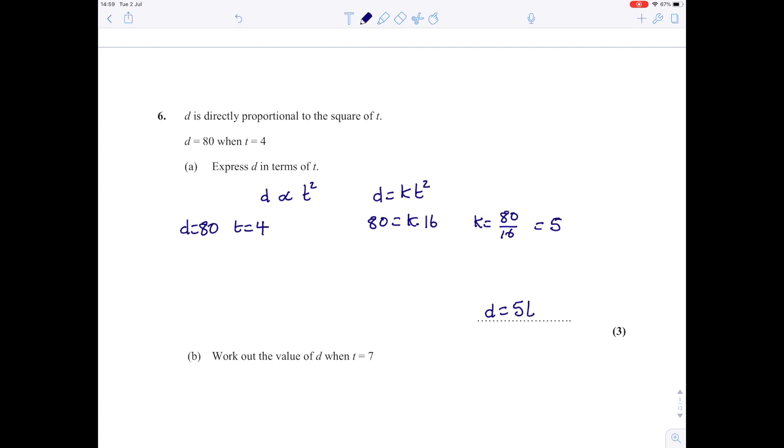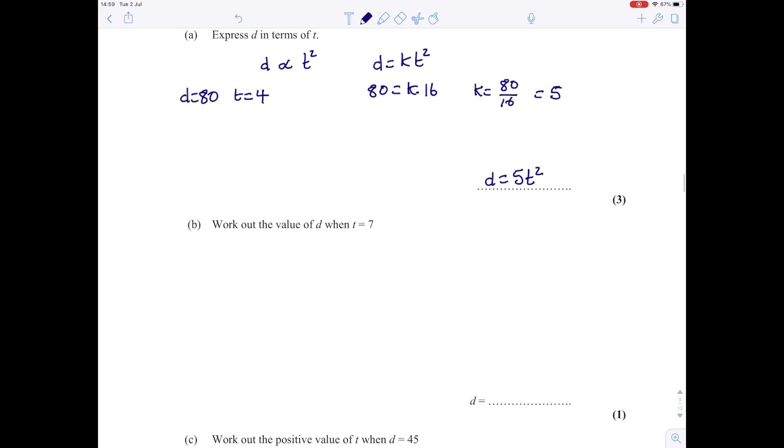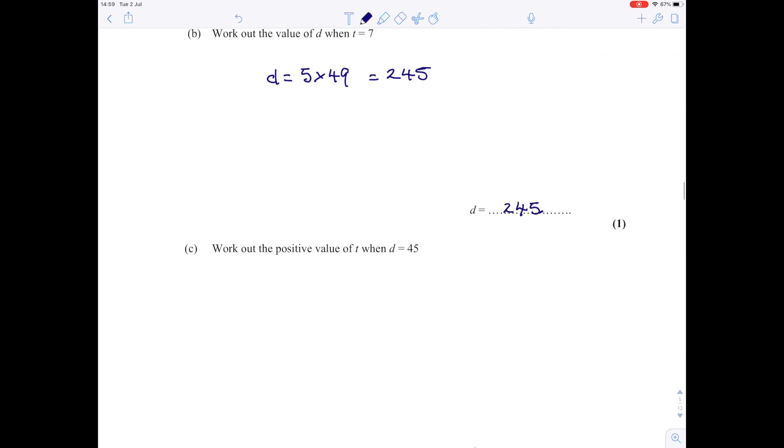So we have the connection d is 5 times t squared, and that will hold for the whole question whatever values of d and t we put in. To work out the value of d when t equals 7: d is 5 multiplied by 7 squared, which is 49, and 5 times 49 is 245. So d is 245.